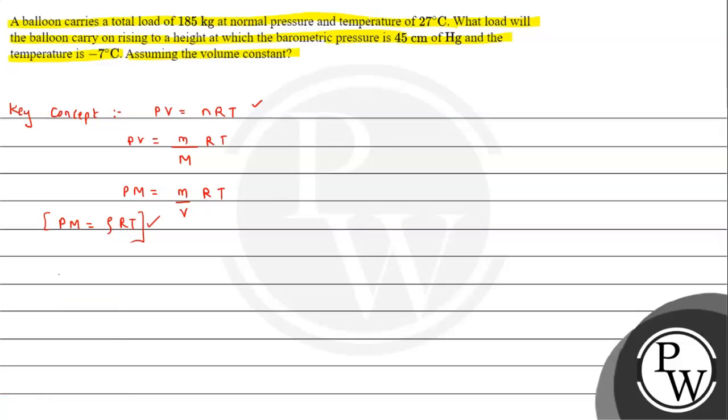In the question it has been given that at normal pressure and temperature it can carry a total load of 185 kg. So normal pressure, let's say P1, is equals to 76 cm of Hg. Temperature T1 has been given as 27 degrees Celsius, so 27 plus 273, it will come out to be 300 Kelvin.